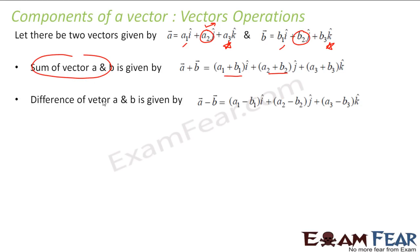Similarly, if you want to find the difference, instead of addition you subtract: the î part becomes a1 − b1, the ĵ part becomes a2 − b2, and the k̂ part becomes a3 − b3.